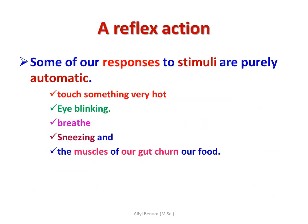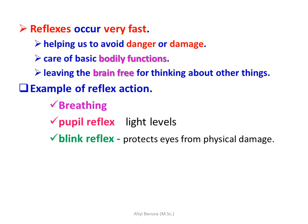Some of our responses to stimuli are purely automatic — for example, touching something very hot, eye blinking, breathing, sneezing, and the muscles of our guts moving our food. These reflexes occur very fast, helping us to avoid danger or damage and take care of basic bodily functions, leaving the brain free for other thinking. Examples include breathing, the pupillary reflex controlling light levels, and blinking reflexes that protect the eyes from physical damage.